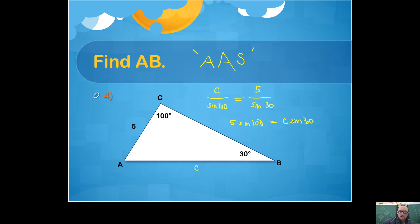You want to get c by itself, so you're going to divide both sides by the sine of 30. So I'm just kind of working out the algebra for you, even though we've done this a few times already. Divide by the sine of 30.